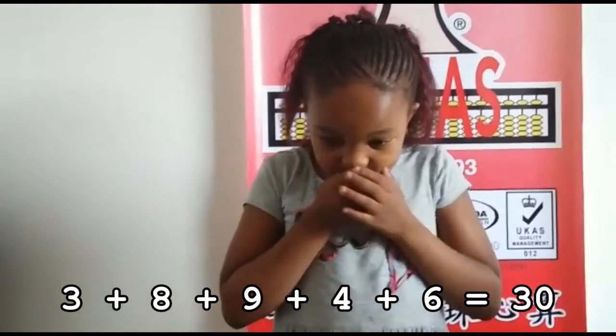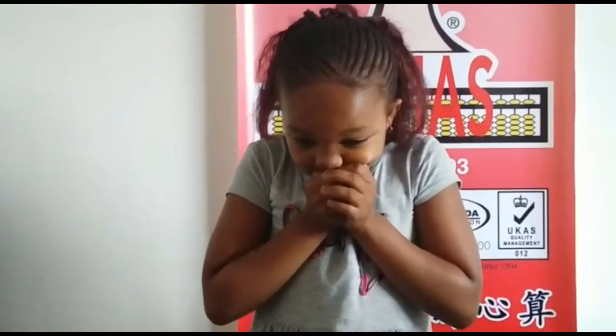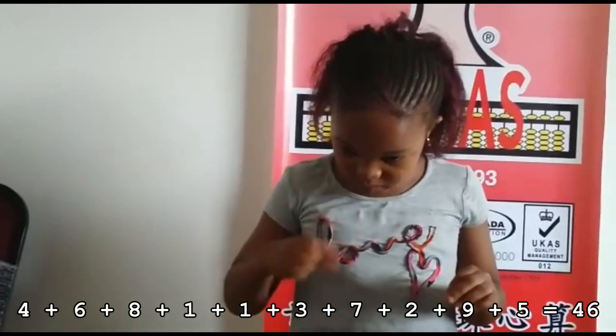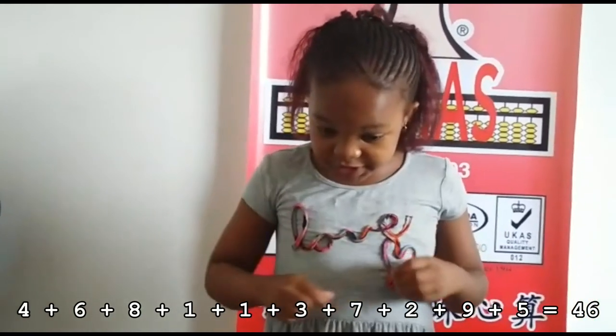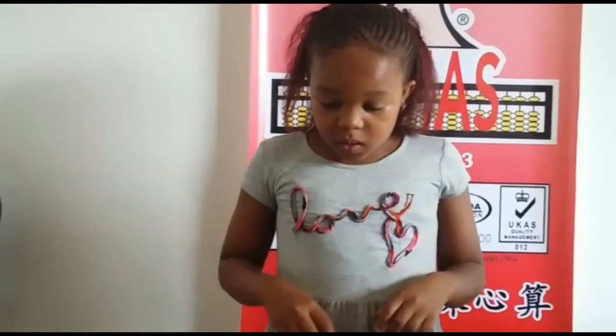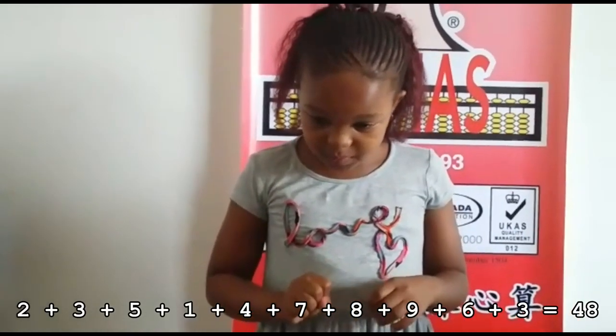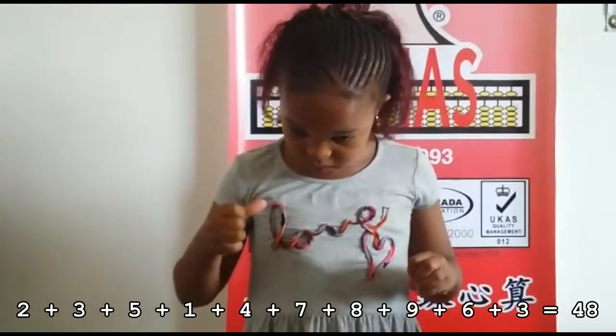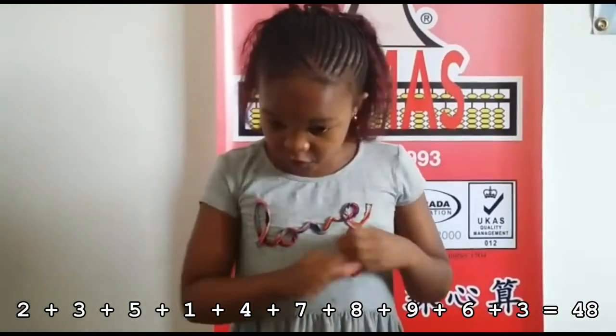That is. All right, now you go to one digit 10 rows, okay. Ready. 4 plus 6, 8, 1, 1, 3, 7, 2, 9, 5. That's... 2 plus 3, 5, 1, 4, 7, 8, 9, 6, 3. That's 40.